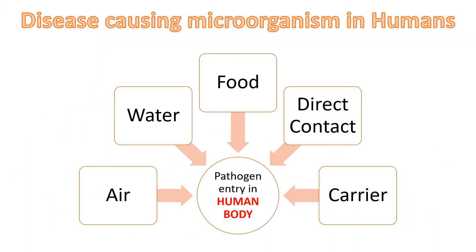If we first discuss humans, how do pathogens enter the human body? It may be by the air he breathes, by the water he drinks, by the food he eats, by direct contact with an infected person, or through a carrier who transfers the pathogen into the human body.